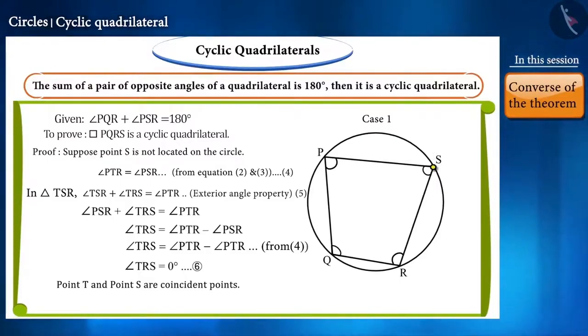Thus, the point S is located on the circle itself. Therefore, our assumption is false.